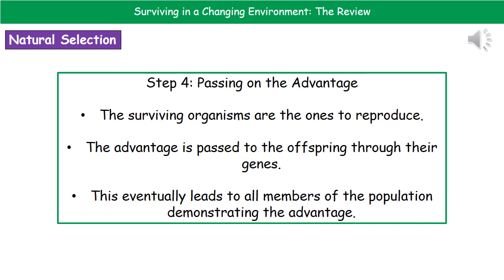The final stage looks at what happens to pass on that advantage. The organisms that are better adapted are the ones that will survive and reproduce, which means that advantage is then going to be passed to the offspring through their genes. Over a long period of time, all members of the population demonstrate that advantage, because only those organisms with the advantage have survived, reproduced, and passed on the genes for it.